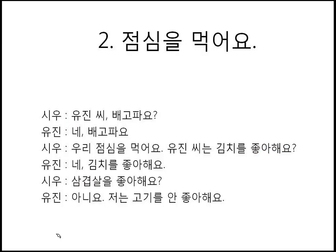Let's see the conversation. The characters are 시우 and 유진 — the man might be 시우, and 유진 might be the girl. 유진 씨, 배고파요? — Yujin, are you hungry? 네, 배고파요. — Yes, I'm hungry. 우리 점심을 먹어요. — That means let's have lunch together. 우리 is 'we' or 'us' and includes the meaning of together.